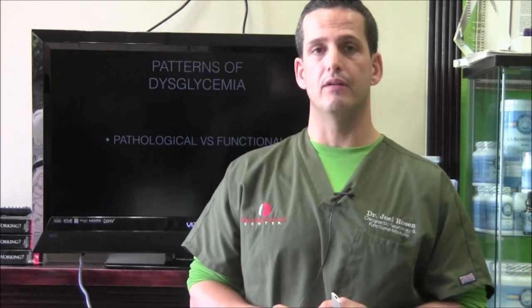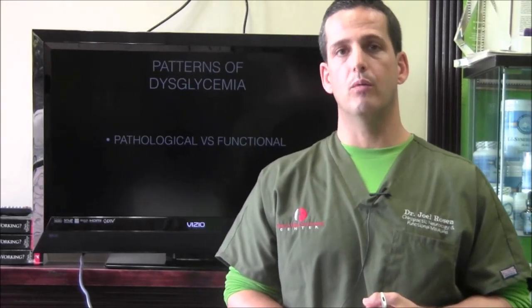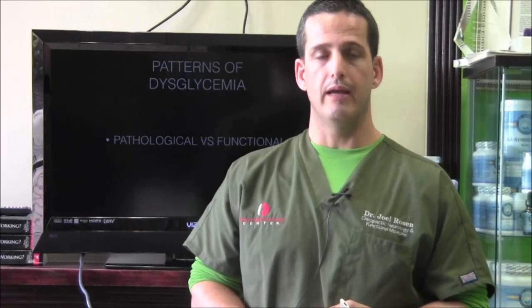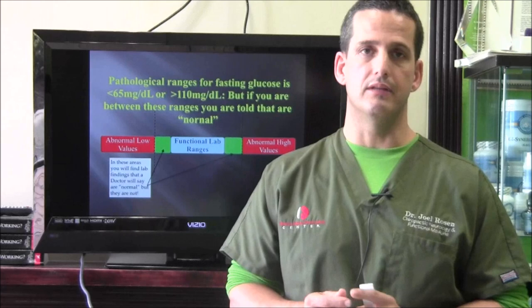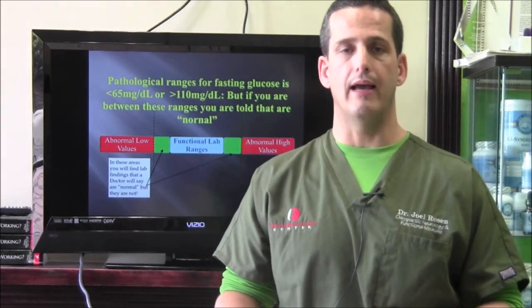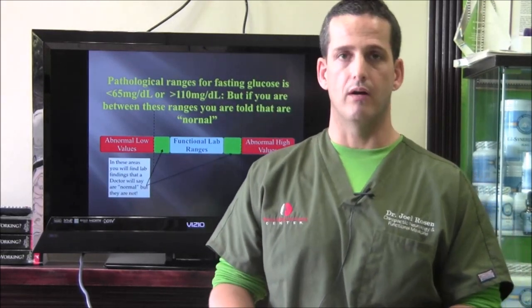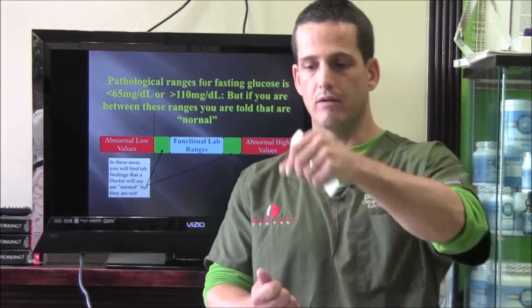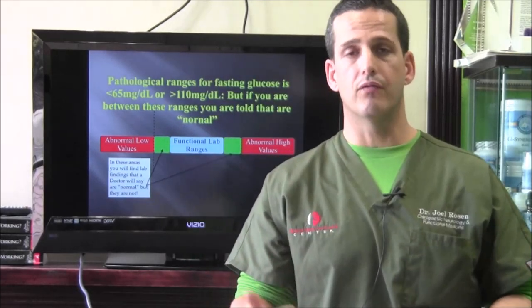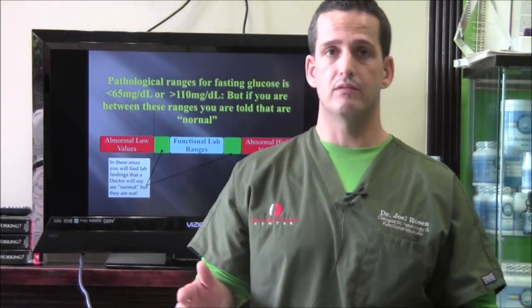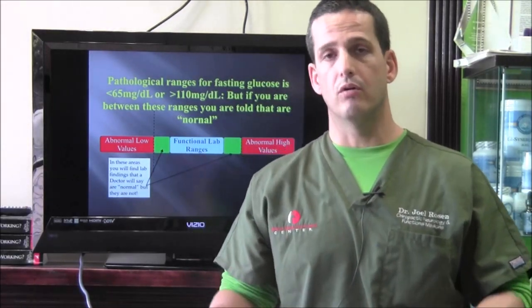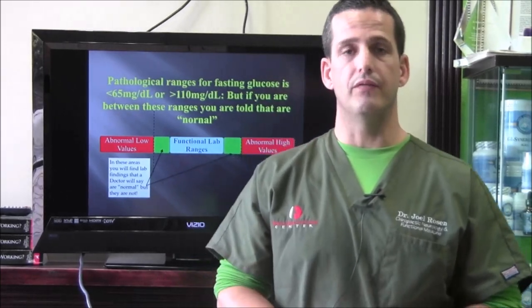There is a difference between a pathological problem with blood sugar and a functional problem. We have lab ranges and we have healthy functional ranges. When you go to get your blood drawn and you get results back, if there are any H's or L's for high or low, you're beyond the pathological lab range. If you don't see any H's or L's, you're told your blood tests are normal — yet you still feel lousy.